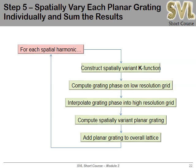The main algorithm feeds in the unit cell, performs the expansion, and — say we retain 7×7 = 49 planar gratings — sets up a loop through each one. For each planar grating, just as in the previous lecture: construct the K function, calculate the grating phase on the low-resolution grid, interpolate that to the high-resolution grid, calculate the analog grating, and add it to the overall lattice (initialized to zero before the loop). These four steps are the same as before; we just sum them all to get the spatially variant lattice.